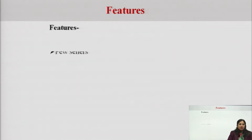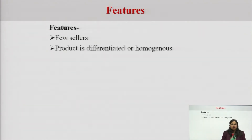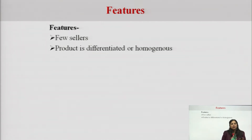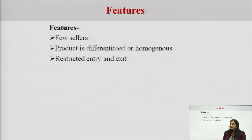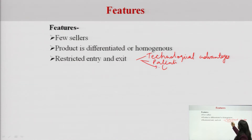Coming to the prominent features. First, few sellers — we have already discussed the meaning of few. Second, the product is differentiated or homogeneous — product differentiation means the same generic product is offered with some changes by different rivals, so buyers can identify the seller's product, either by real or imaginary differences. Third, there is restricted entry and exit, because of technological advantages that new entrants cannot copy, patents, legal restrictions, or economies of scale, which is why new players are not able to enter the industry.